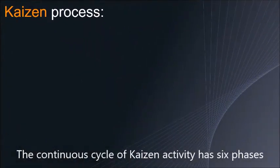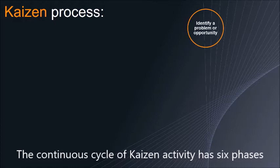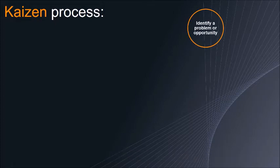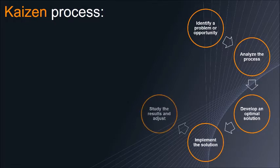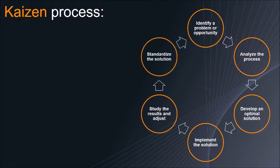The continuous cycle of Kaizen activity has six phases: identify a problem or opportunity, analyze the process, develop an optimal solution, implement the solution, study the results and adjust, and finally standardize the solution.